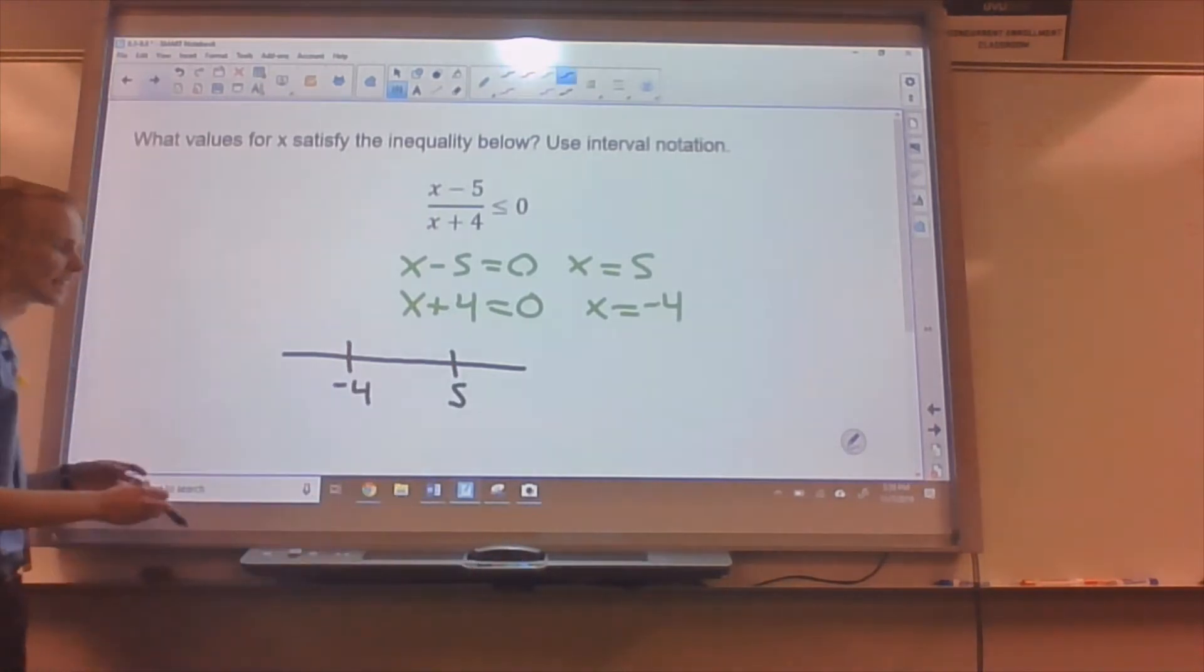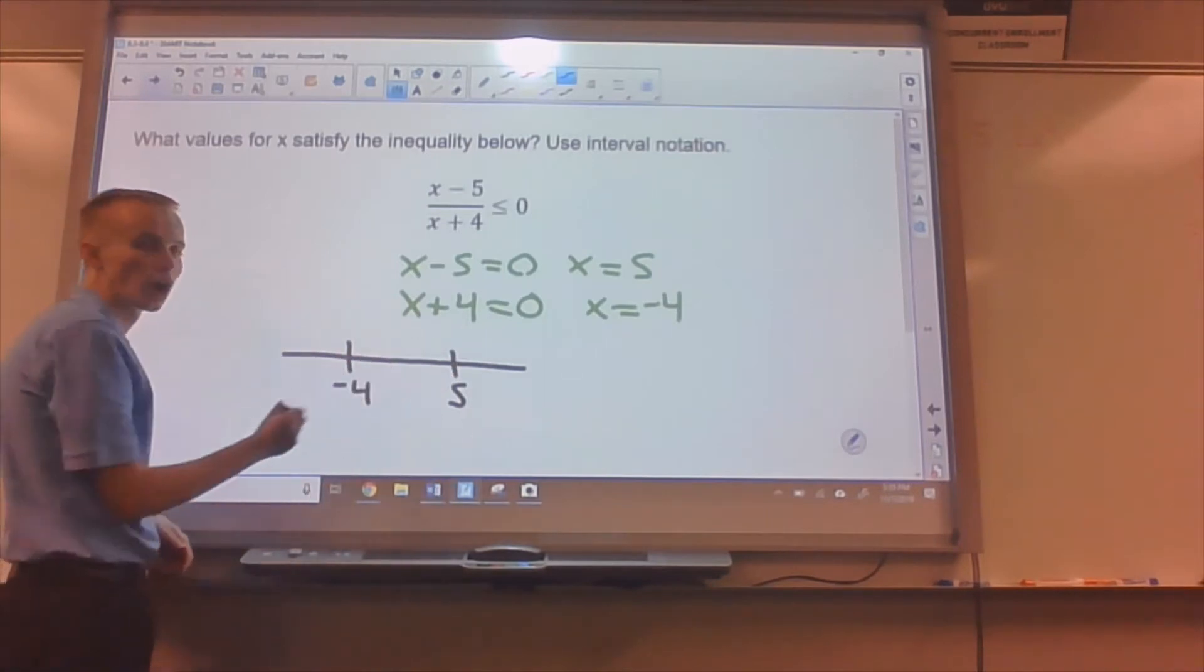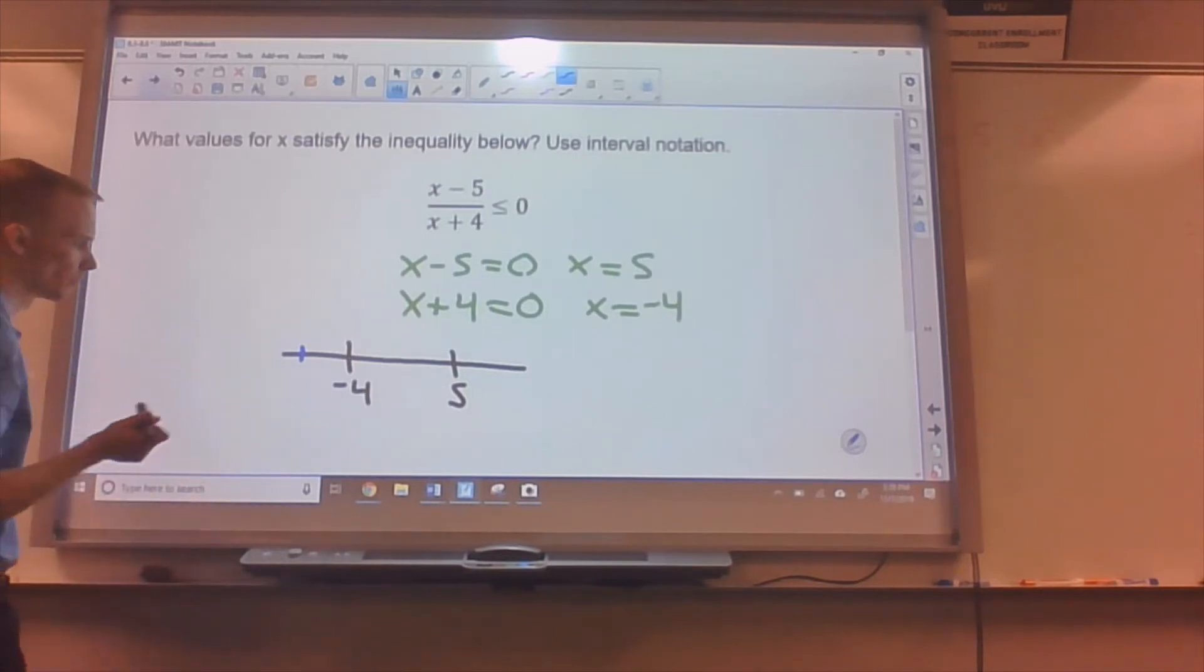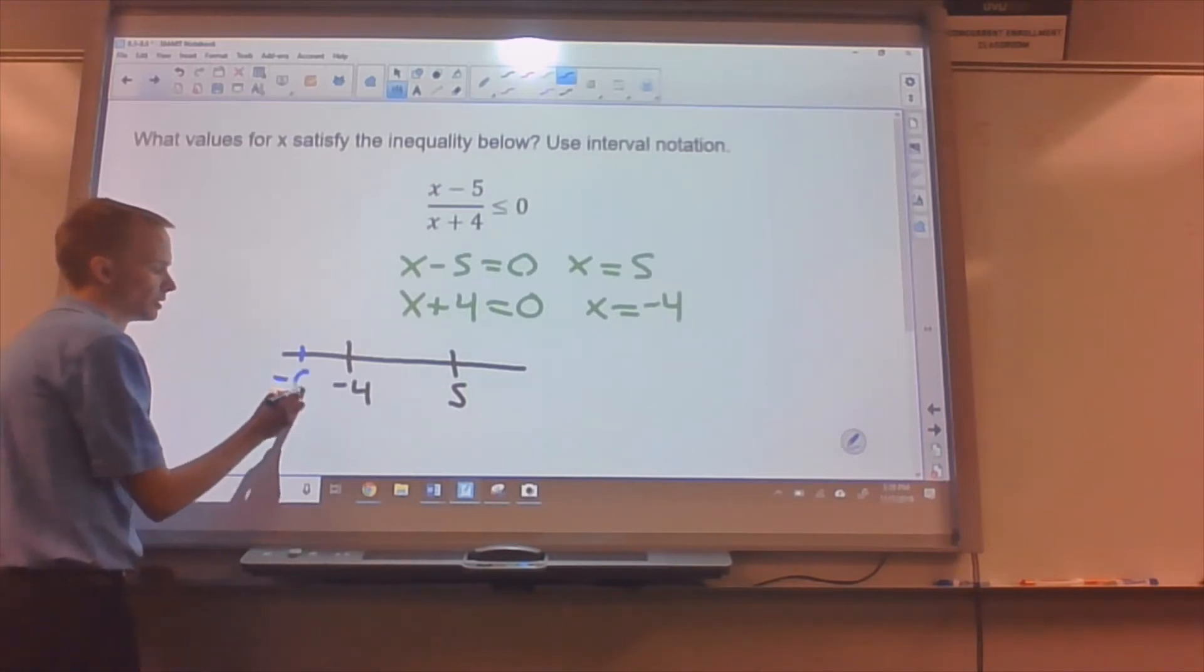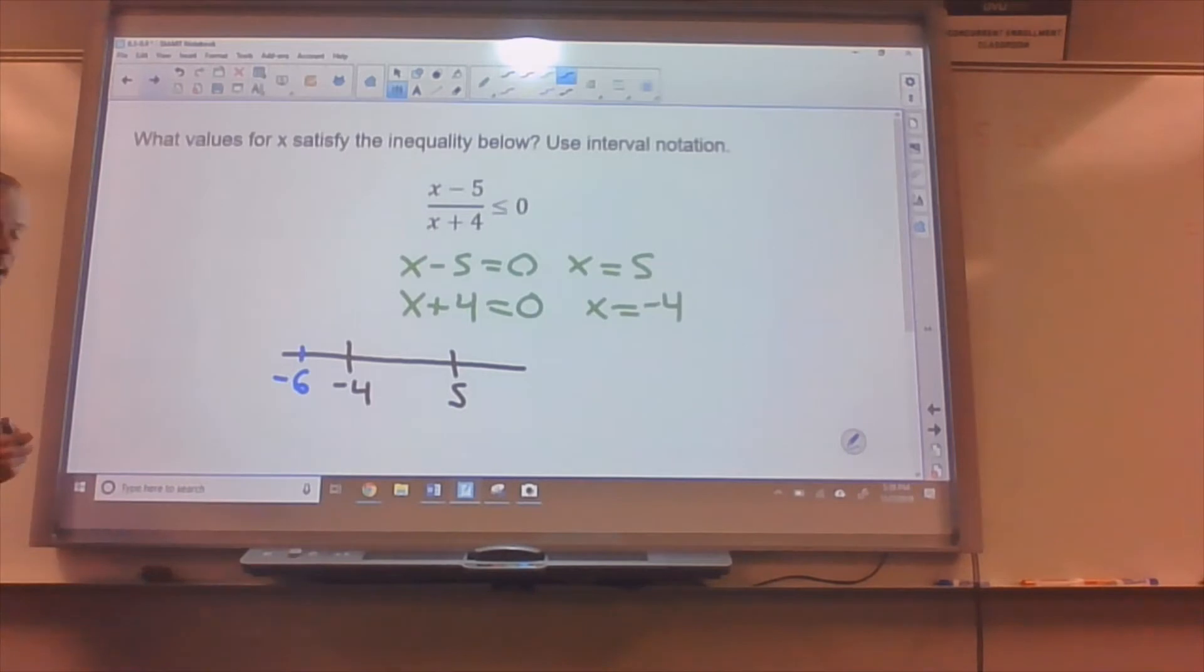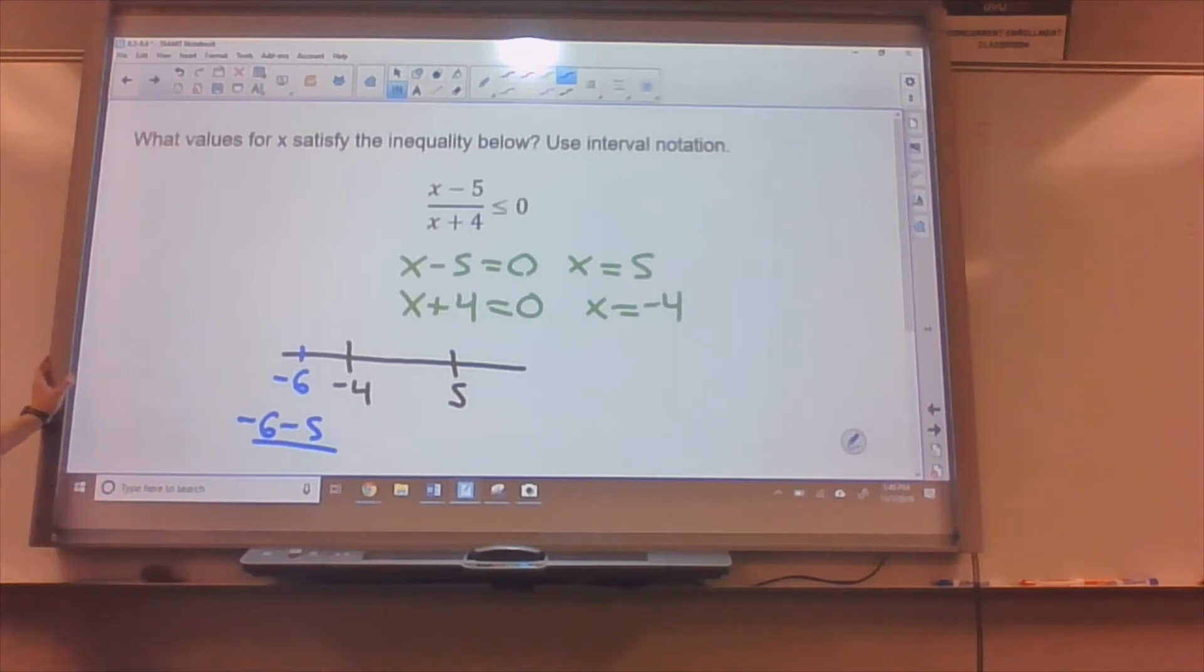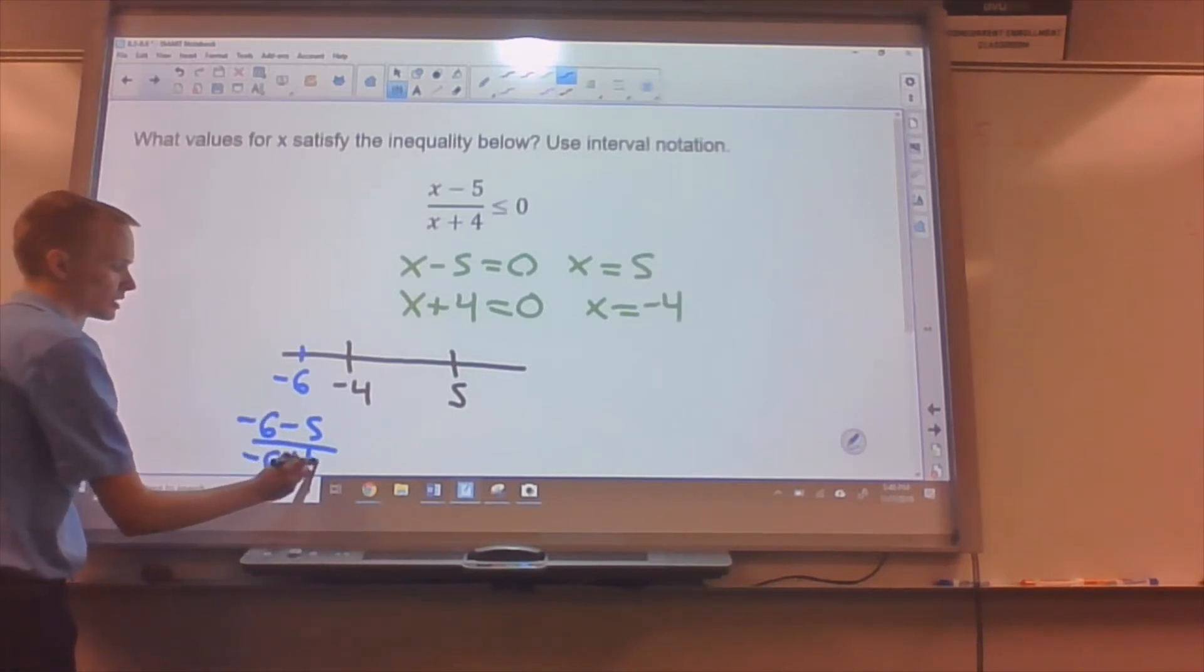And then I plug in some numbers in every chunk of the number line. So to the left of negative four, I could throw in, I don't know, negative six or negative five something. I'll do negative six. So I'll replace x with negative six in the equation. Negative six minus five over negative six plus four.